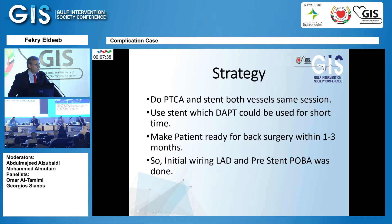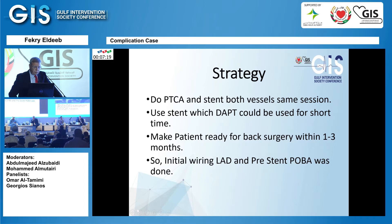My strategy was straightforward: to prepare the lesion by balloon angioplasty and then deploy probably a long stent, or maybe two stents in the LAD, and one stent in the right coronary artery — using a stent that does not necessarily require long dual antiplatelet therapy if possible.